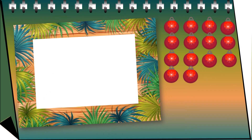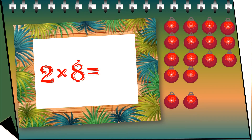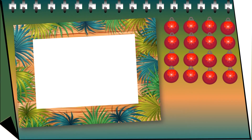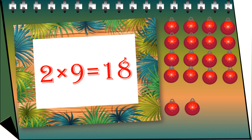Now we have fourteen balls. Add two to it — it becomes sixteen. So we add it eight times. Add two balls again to sixteen balls. Now it has become eighteen balls. So two nines are eighteen.